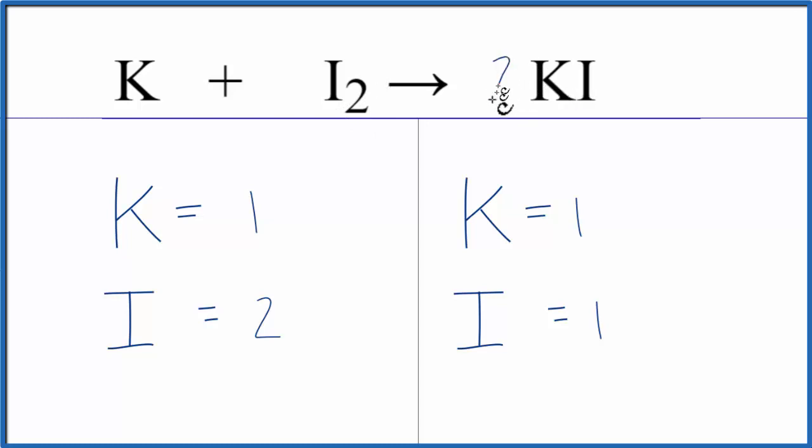We're going to put a 2, because this 2 applies to the K and it applies to the iodine. So we have the 1 iodine times 2, and that gives us 2 iodines. So these are balanced.